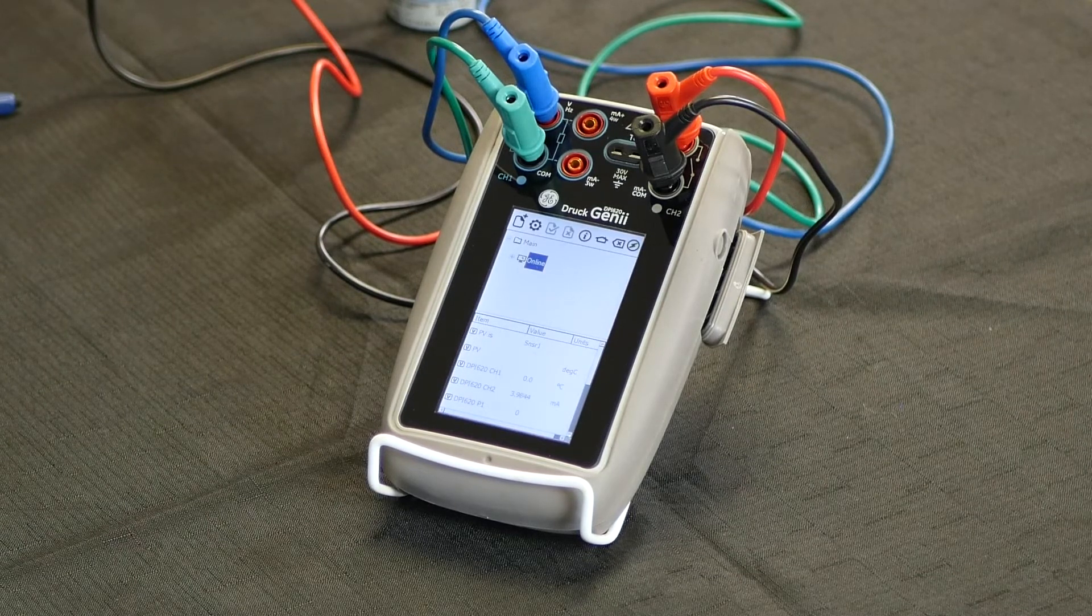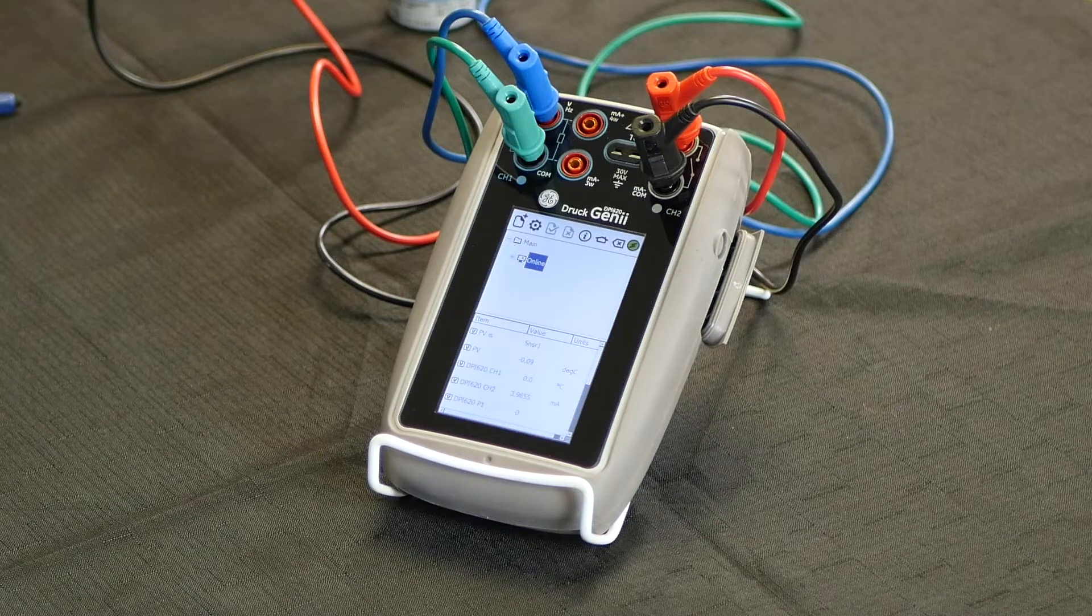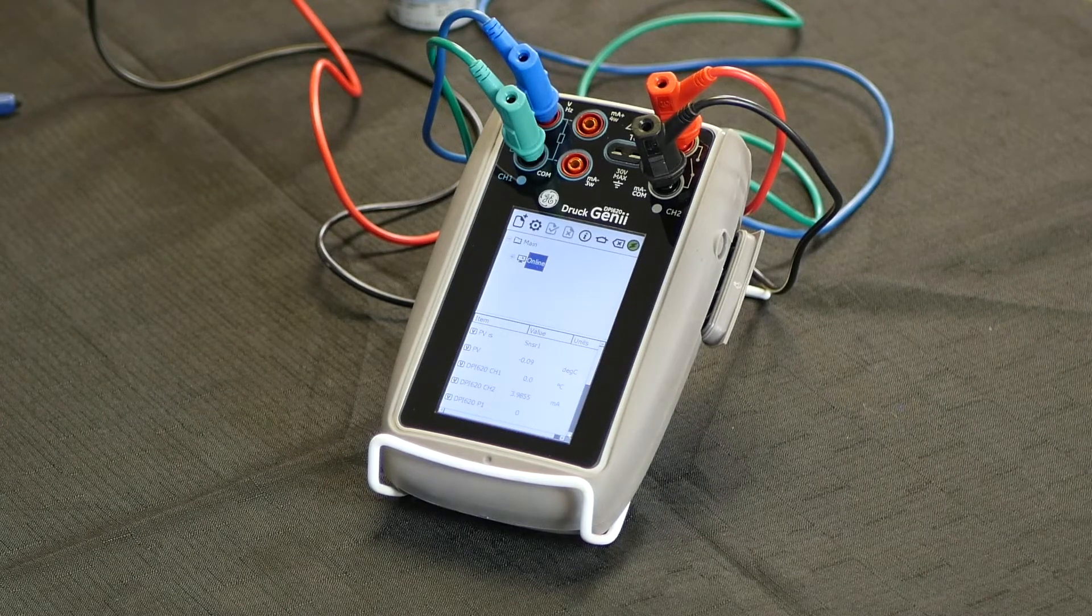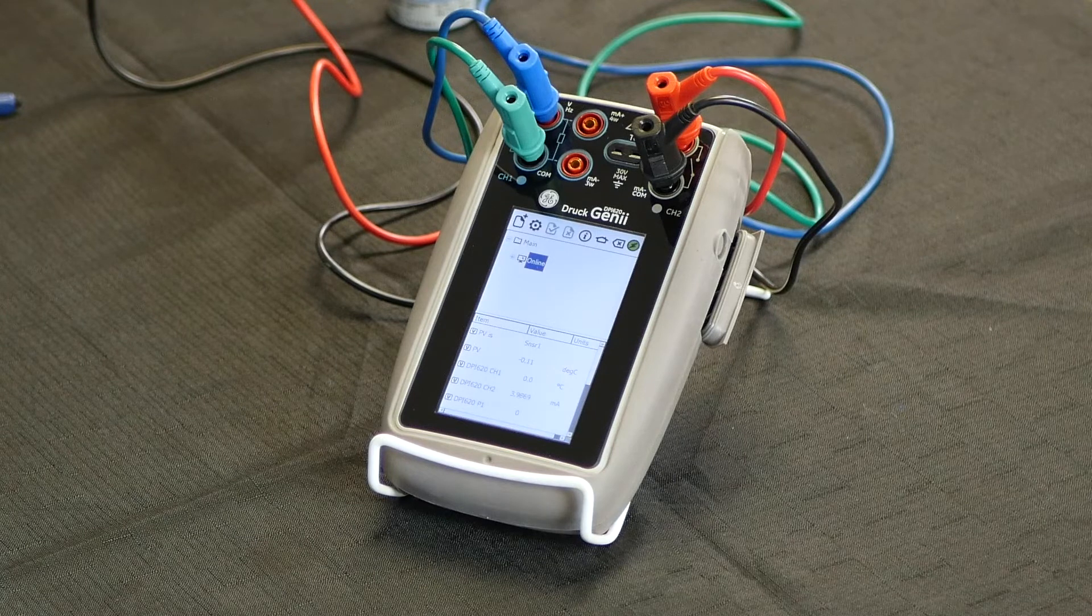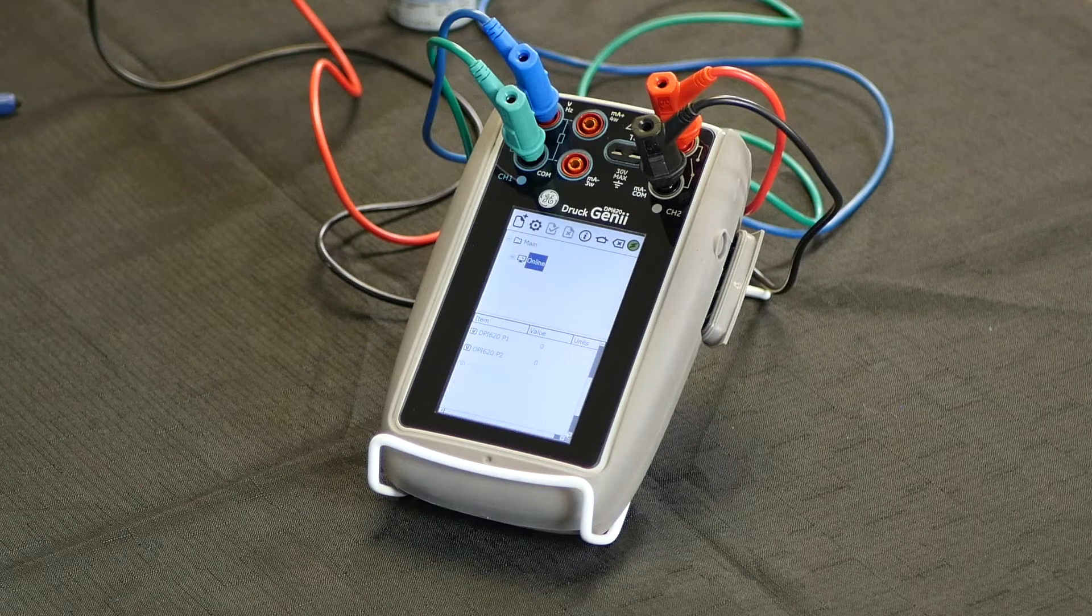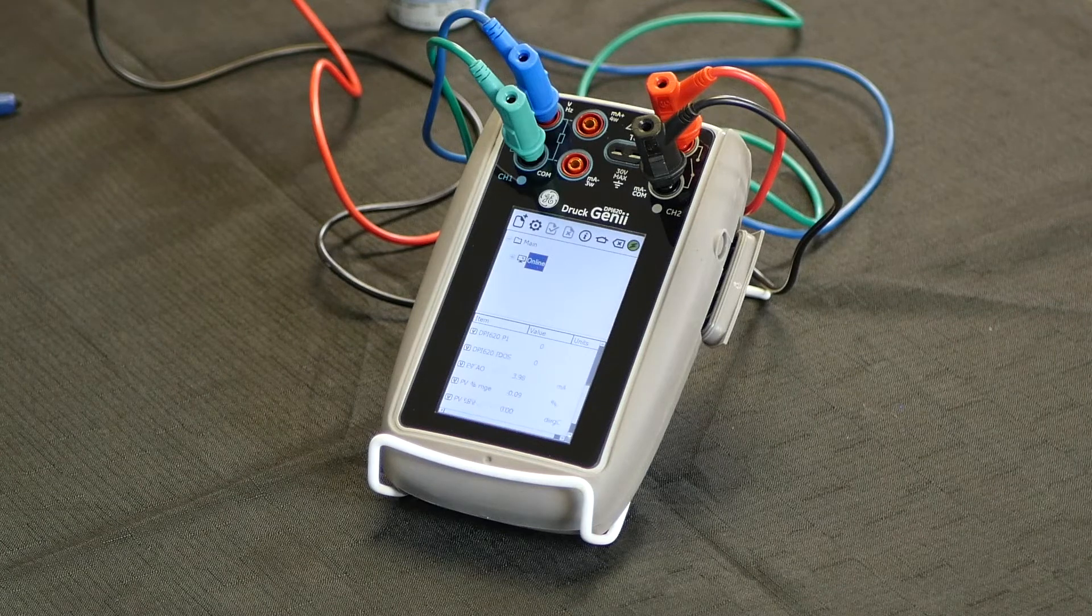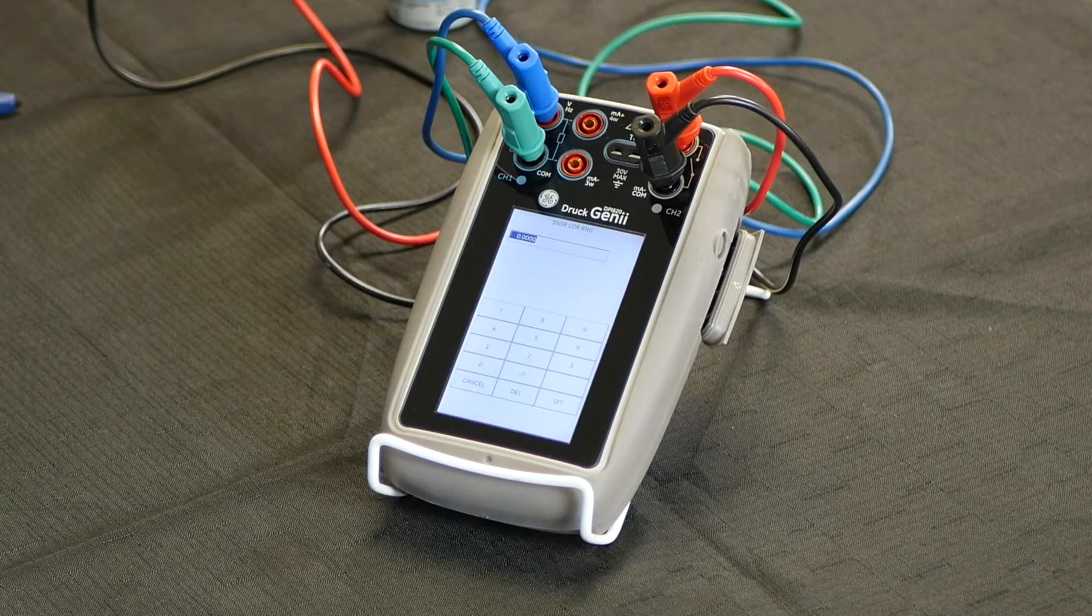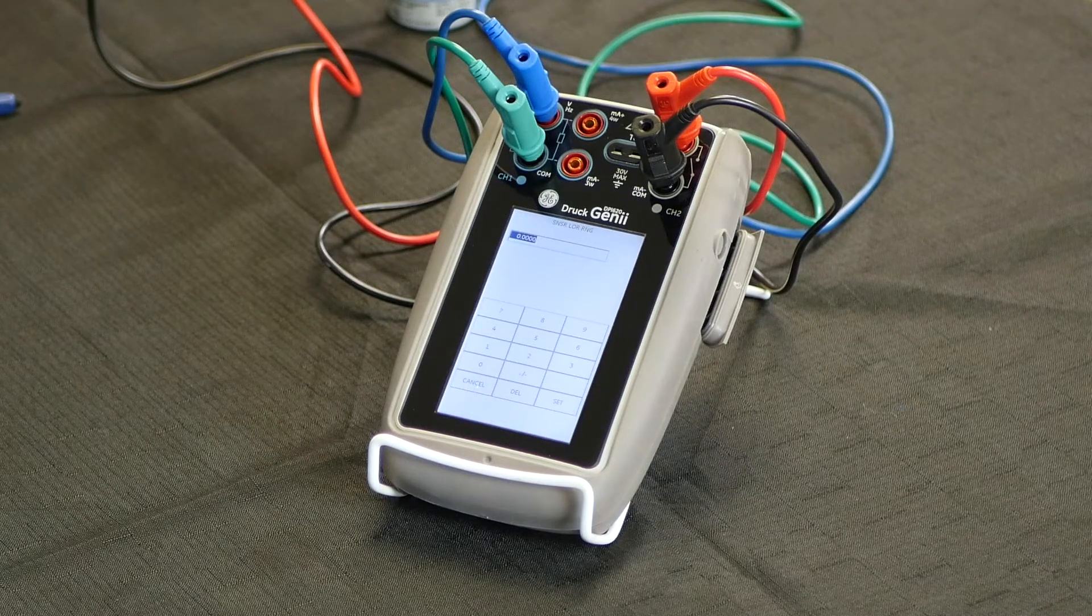On the bottom half of the screen, we're displaying measured values. Any value in red will be a value of the device under test, our transmitter. Any value in blue will be one sourced or simulated from the DPI 620. And any value in black is a value that we can change through the communicator.